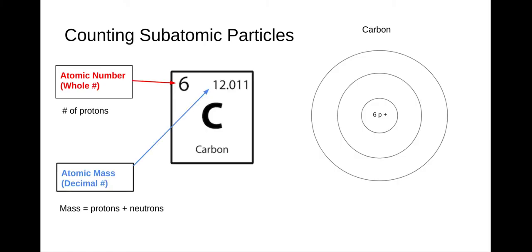The mass number tells us the protons plus the neutrons. So the first thing we do is take that mass and round it to the nearest number, which is 12. We know that we have six protons in carbon because it's the atomic number. So we can set up an equation: the mass of 12 equals the protons, 6, plus the neutrons. If we subtract the 6, that tells us we have six neutrons in carbon. Remember, the neutrons go with the protons in the center, in the nucleus.